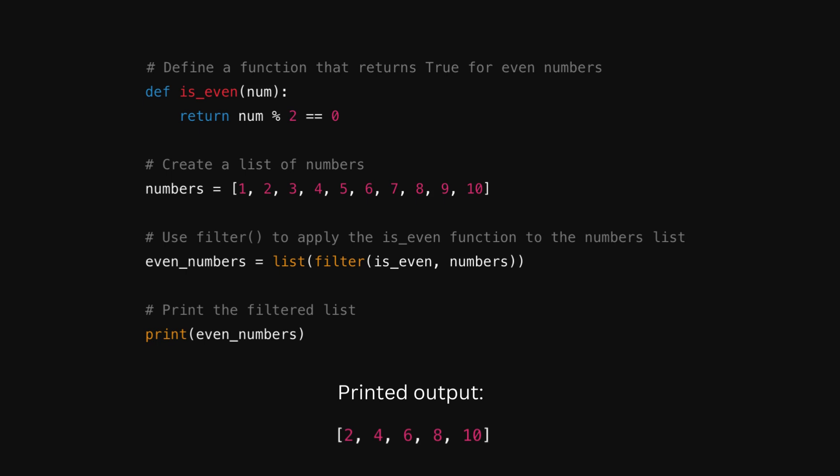Now we're going to turn that iterable into a list just so we can print it easier, and we can see that 2, 4, 6, 8, and 10 were returned.